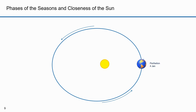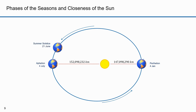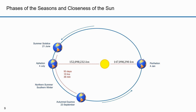Here is the closest point, which we call perihelion. In 2014 it occurred on January 4th. Here is the farthest point, which we call aphelion. In 2014 it occurred on July 4th. Now we can lay in the seasons. Summer solstice is on June 21st — that is when the sun shines longest in the north and shortest in the south. That is about 12 and a half days prior to the aphelion point. Note that at summer solstice the earth is farthest from the sun — it is ironic that in the north, during our hot season, the sun is farthest away.